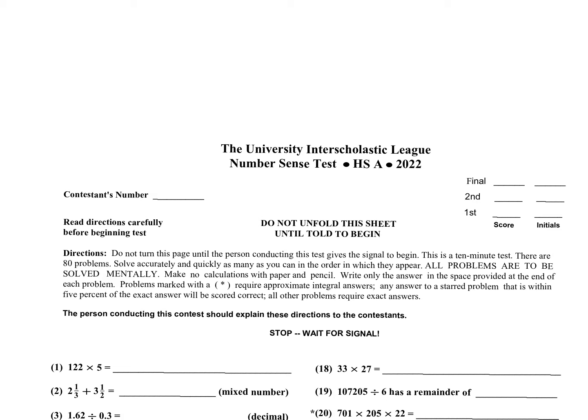Today I'm doing the UIL Number Sense test — high school test A from 2022. In this video I'm going to go over the first 20 problems and go in detail over some of the shortcuts and tricks from Number Sense. This is mental mathematics, and all problems are to be solved mentally.